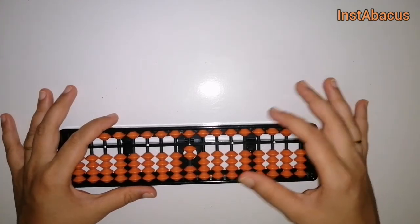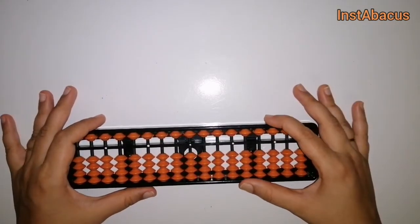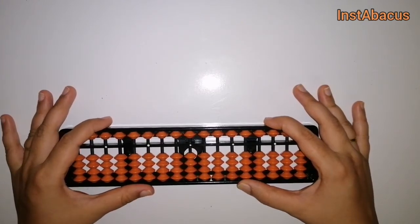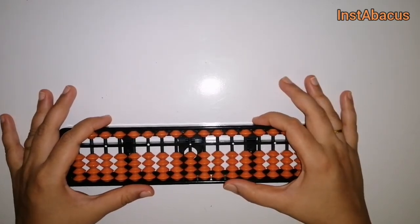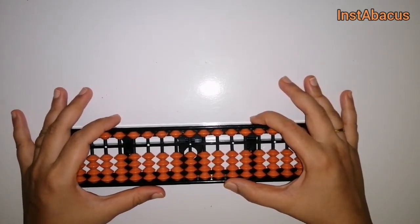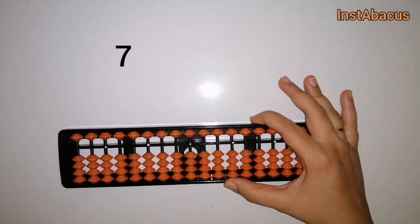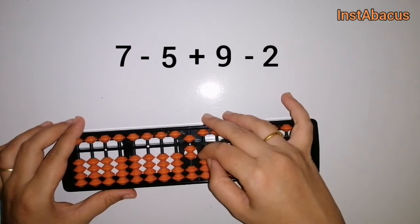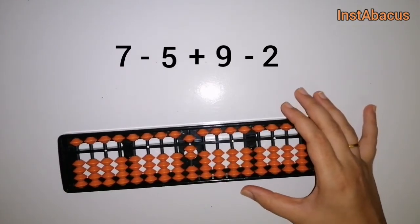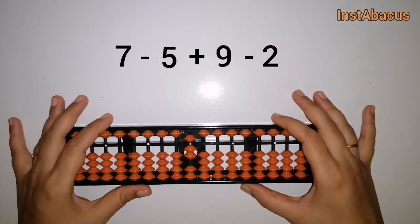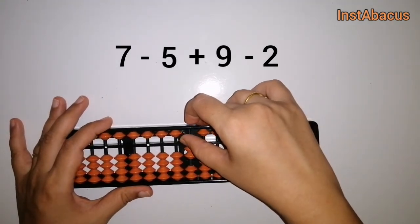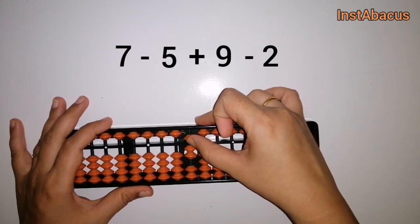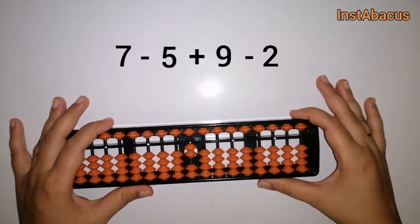I'm also giving an assignment or practice worksheet for you all — the link will be in the description, so do check that out. The next example: seven minus five plus nine minus two. This is seven on our abacus. Minus five: let's move this heavenly bead away from the answering bar.